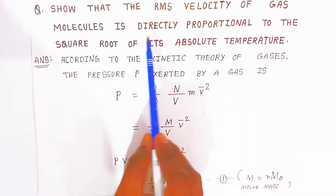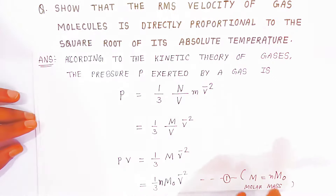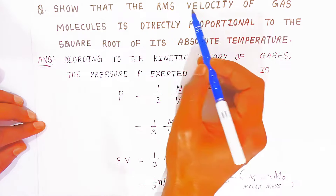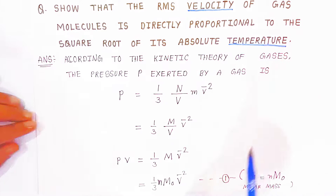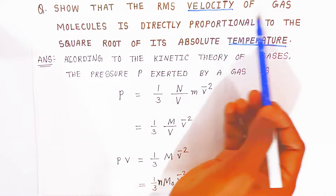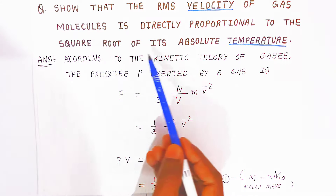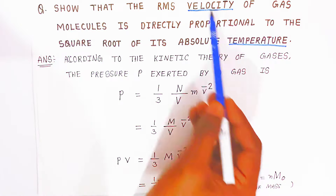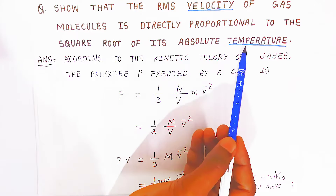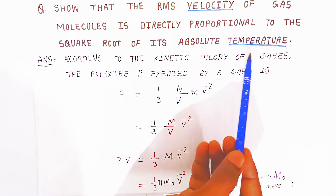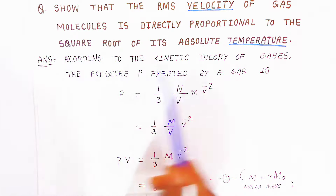We are going to see the relation between velocity and temperature. The velocity of a gas molecule is directly proportional to the square root of its absolute temperature. We are going to find the relation between velocity and temperature, and now we will see how to write the answer.